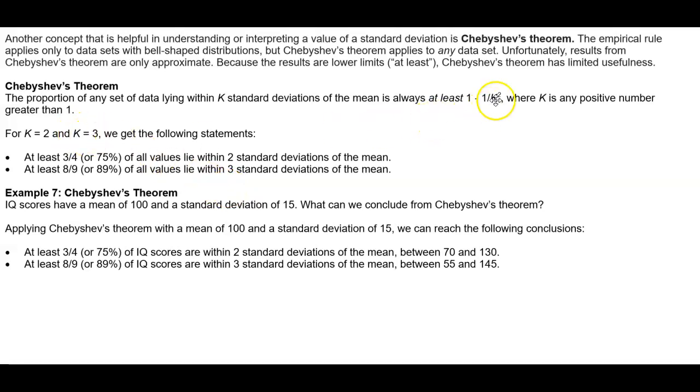Now, if we let K equal 3, that would be 1 minus 1 over 3 squared, which then would give us 8 ninths. So at least 8 ninths, or 89%, of all values would lie within three standard deviations of the mean.